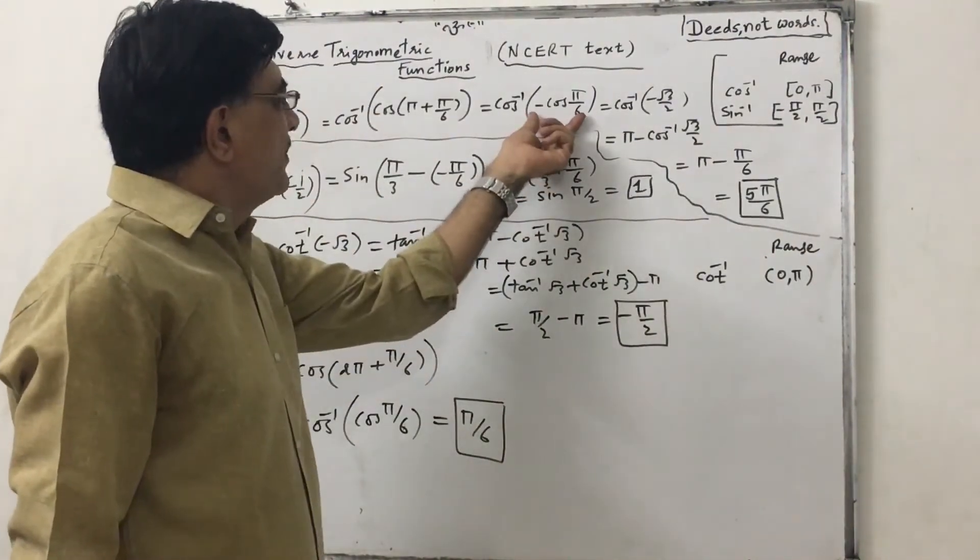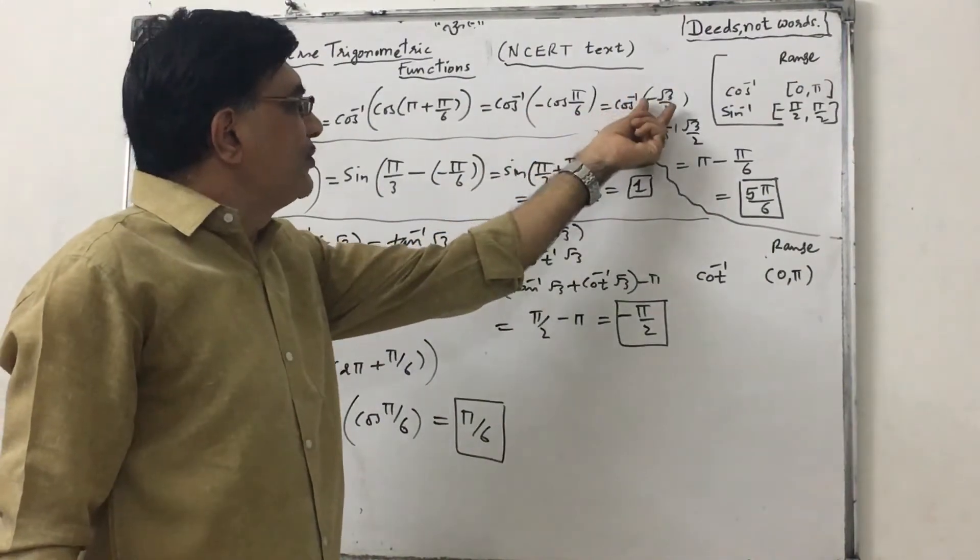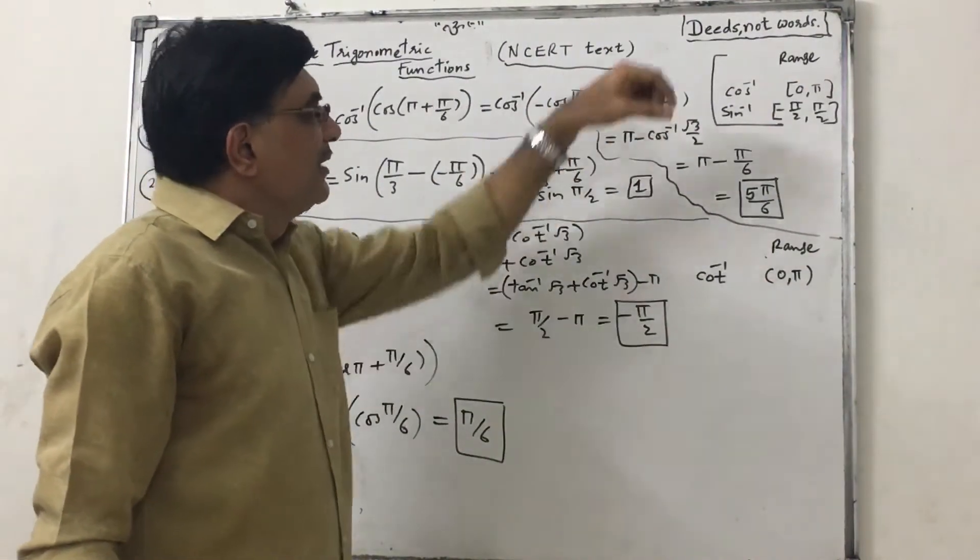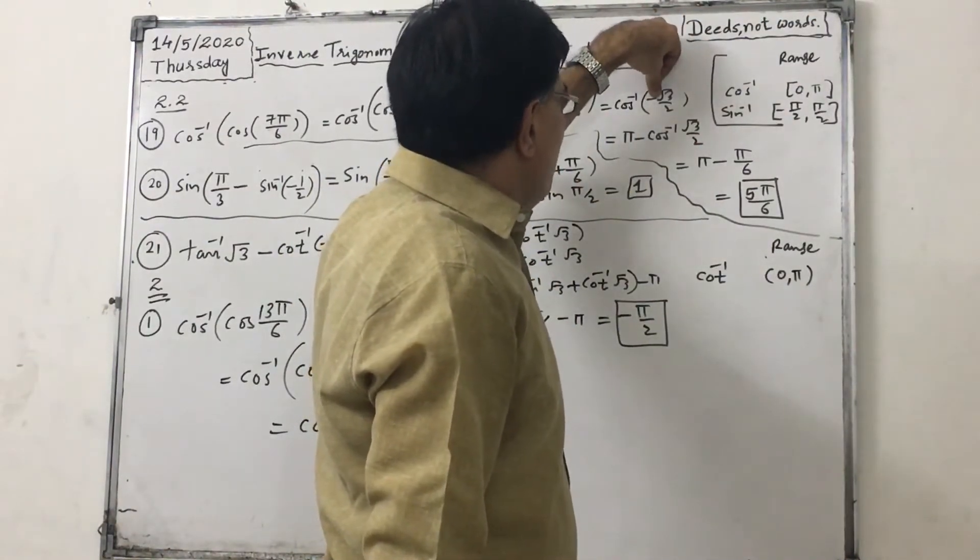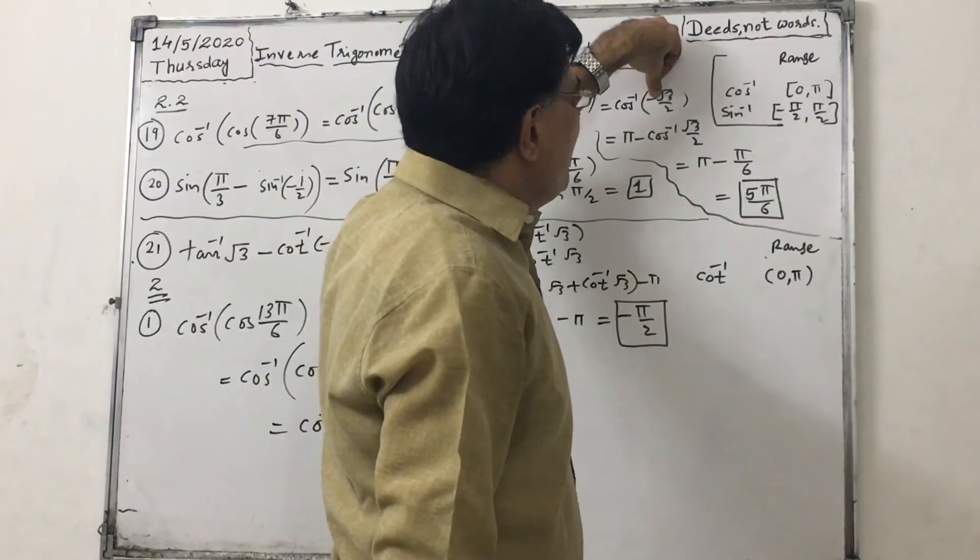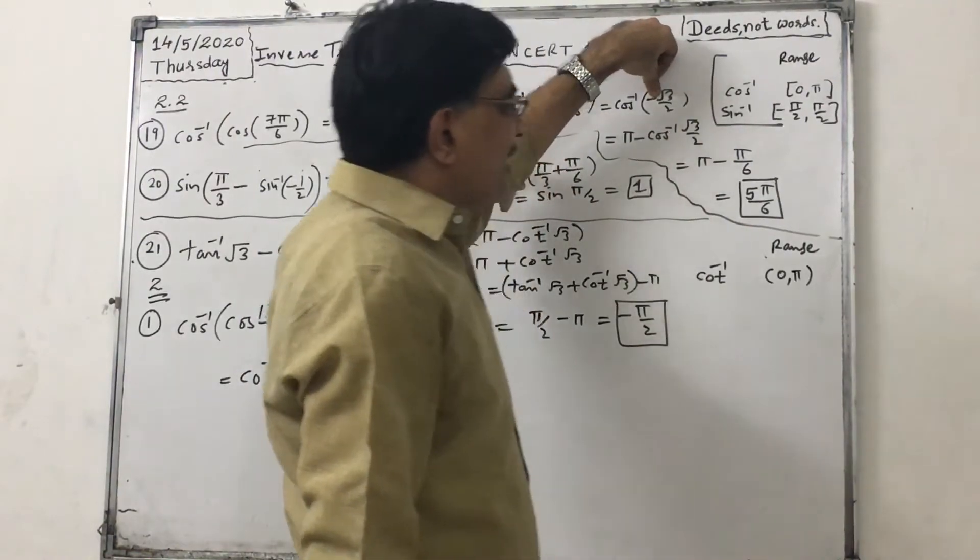So it is minus cos π by 6, so it is minus root 3 by 2. Now range of cos inverse is 0 to π and here the asked domain value is negative, so it is in second quadrant.